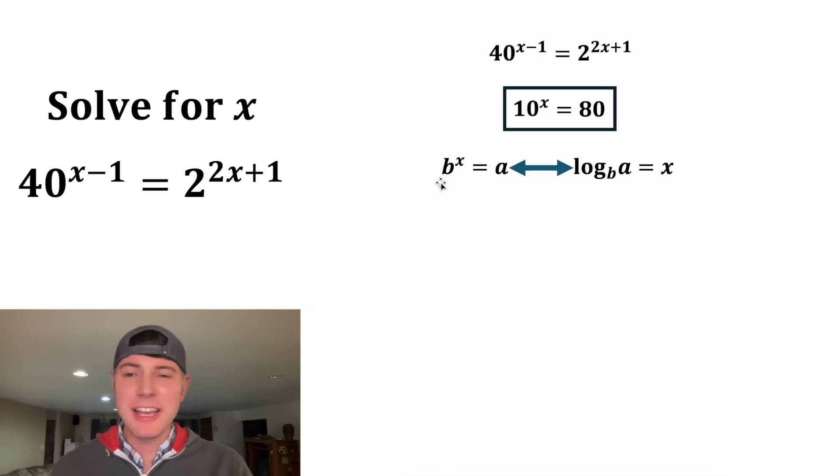The next notes are how we tie an exponential equation to a logarithmic equation. The base of the exponent is equal to the base of the logarithm. The thing out here goes inside the logarithm and the exponent is what the logarithm is equal to. So if we have something like 10 to the x equals 80, we would write out log. The base of the exponent would be the base of the logarithm. The thing over here is what's put into the log. And then the exponent x is what the log is equal to.